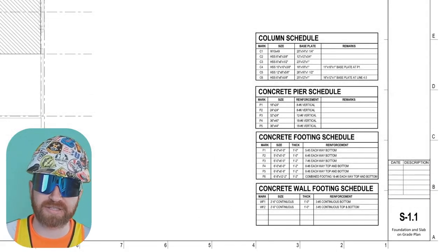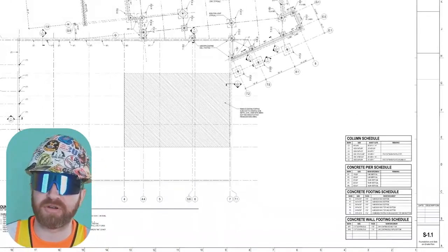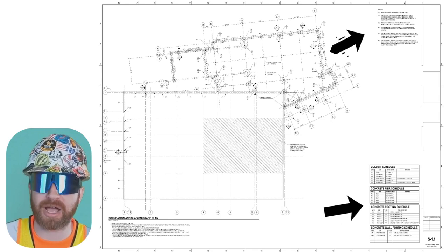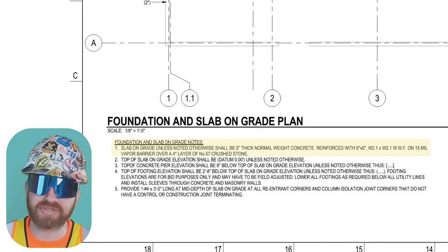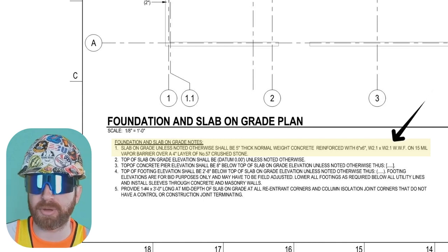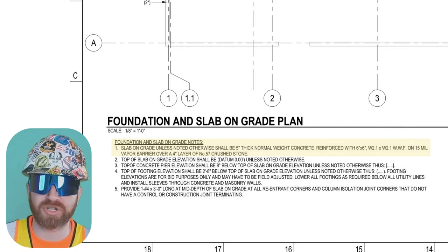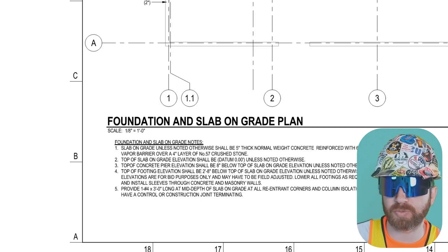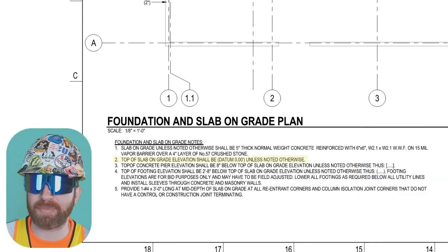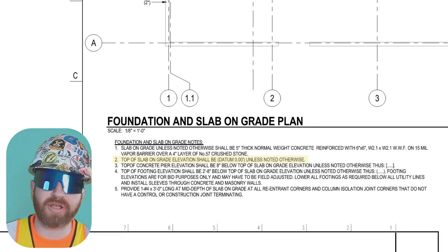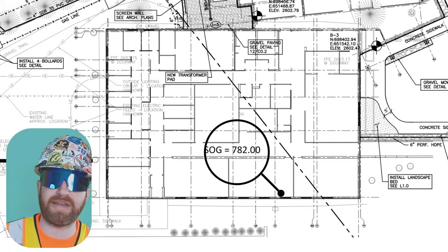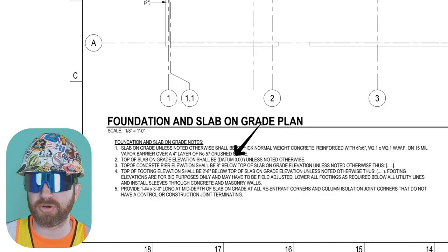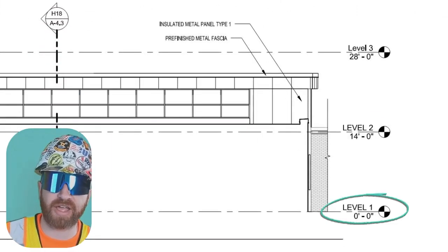Moving on to S1.1, the foundation and slab on grade plan. There's a plan view of the entire project with section cut symbols that take you to further detail pages. There's also a chart bottom right, and note sections top right and bottom left. Note one tells us the thickness of the slab on grade concrete and that it has embedded WWF — welded wire fabric — reinforcement, which is steel mesh in the concrete. Note two tells us the top of slab on grade elevation is 0.00, which corresponds to an actual elevation such as 782 feet on the civil drawing set. This is done to simplify elevations moving forward in the project.